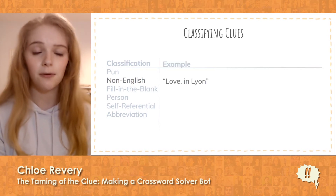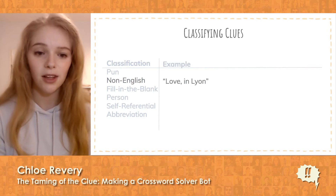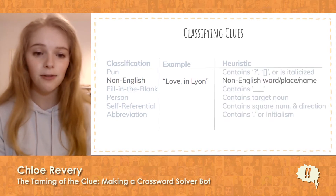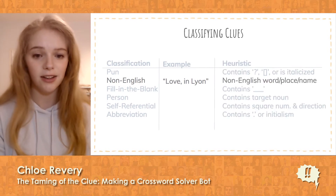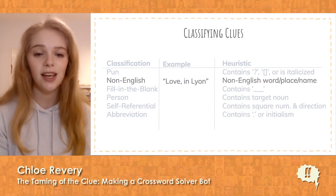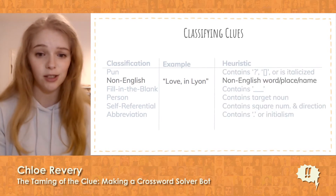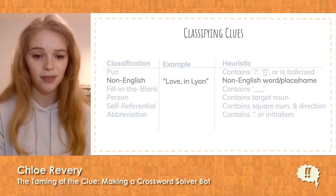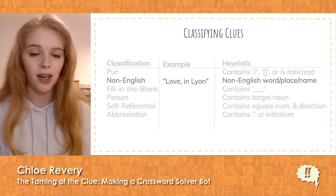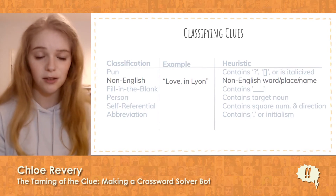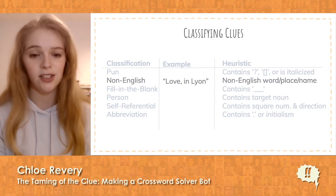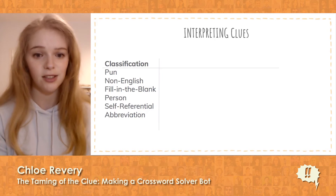For example, if we see the clue 'love in Lyon,' we can classify it as non-English because it contains a non-English word, place, or name. Now that we have this in place, we can use a different API or strategy to generate the answers.